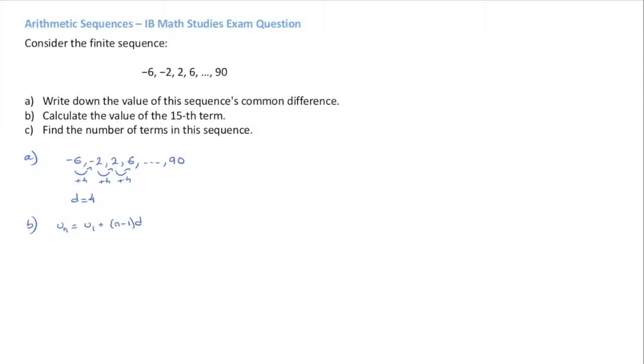Well, we already know what D is from question A. That's the common difference 4. And U1 is simply the first term of the sequence. So in this case, that's negative 6. So we know that U1 equals negative 6, and the common difference D equals 4.